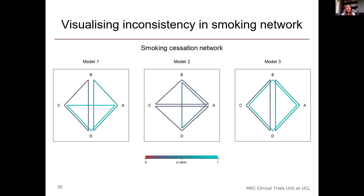These three plots correspond to three different global models. In models one and three, the strongest evidence for inconsistency lies within the BCD loop, which has the color closest to the left of the color spectrum, with a lower p-value than the other two loops. In model two, the p-values associated with each loop are very similar. There is no significant evidence for inconsistency in any of the loops — this is just for illustration.